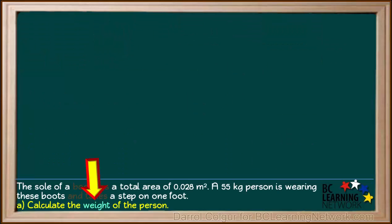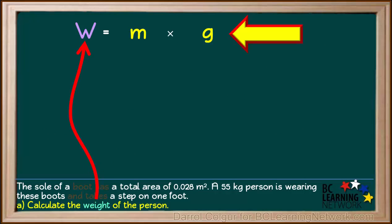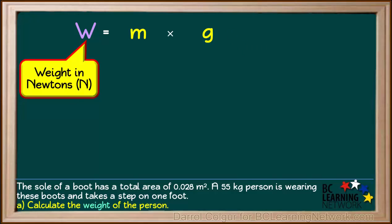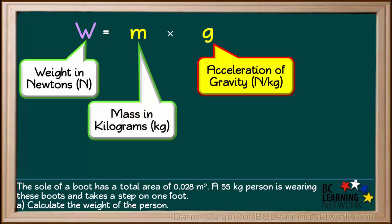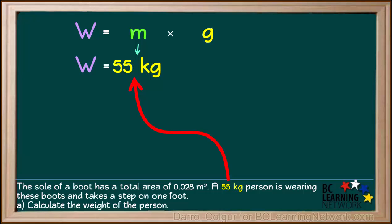We'll start by answering Part A. We need to calculate the weight of the person wearing the boot. The formula we use to calculate weight from mass is W equals M times G, where W is the weight or force of gravity in newtons, M is the mass in kilograms, and G is the acceleration of gravity in newtons per kilogram. We can substitute 55 kilograms in for the mass, and G on Earth is 9.8 newtons per kilogram.